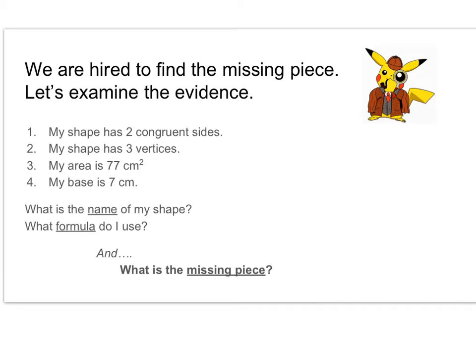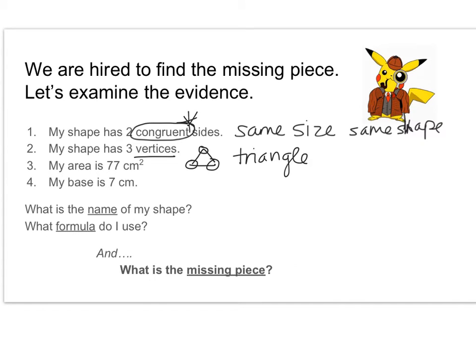We again have another case. This one tells me that my shape has two congruent sides. My shape has three vertices. My area is 77 centimeters squared, and my base is 7 centimeters. From this information, I should be able to say the name of my shape and figure out which formula I need for my star chart. And then I can figure out what is the missing piece. We're going to do a little vocabulary on this side. If you don't know it, make sure you write it down. Congruent is the first thing we need because it tells me that two sides are congruent. Congruent means same size, same shape. We talked about vertices in the last one. It's where two lines join together. It tells me I have three of them. So that means my shape is a triangle.